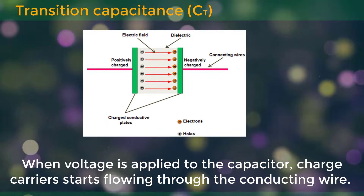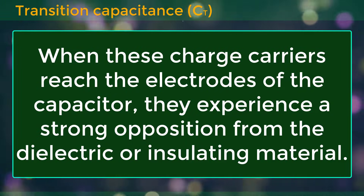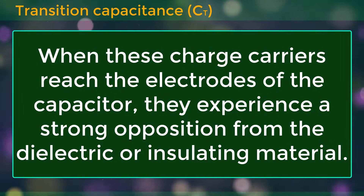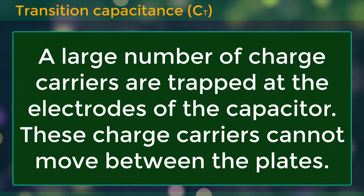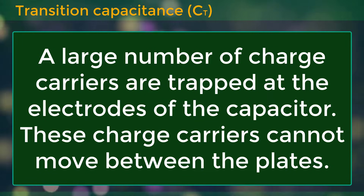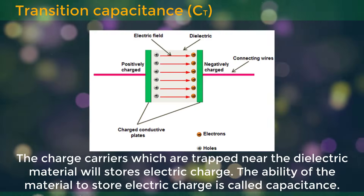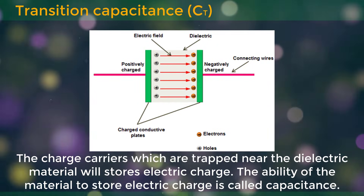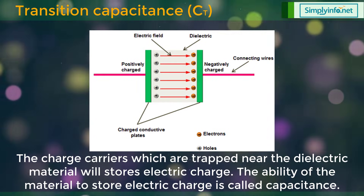When voltage is applied to the capacitor, charge carriers start flowing through the conducting wire. When these charge carriers reach the electrodes of the capacitor, they experience strong opposition from the dielectric or insulating material. As a result, a large number of charge carriers are trapped at the electrodes of the capacitor. These charge carriers cannot move between the plates. The charge carriers which are trapped near the dielectric material will store electric charge.